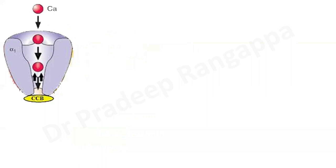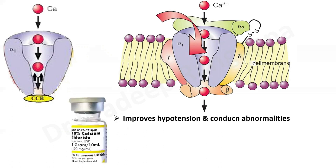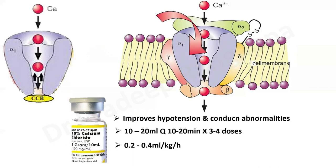Regarding the role of calcium: calcium channel blockers block the L-type calcium channels, preventing entry of calcium. The rationale for giving intravenous calcium is that some channels remain open, and by increasing extracellular calcium, those open channels can be utilized. Calcium chloride is preferred over calcium gluconate. The dose is 10 to 20 ml every 10 to 20 minutes, repeated three to four times. Since it is short-acting, an infusion at 0.2 to 0.4 ml per kg per hour can be considered. Calcium chloride has been shown to improve hypotension and conduction abnormalities.